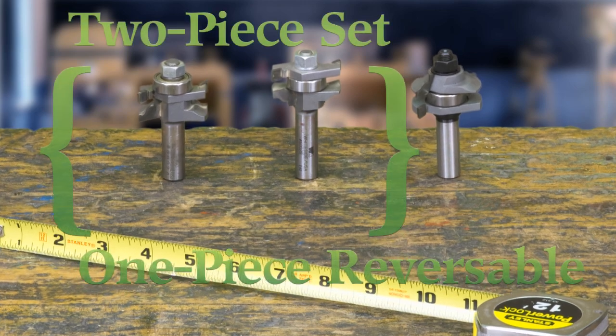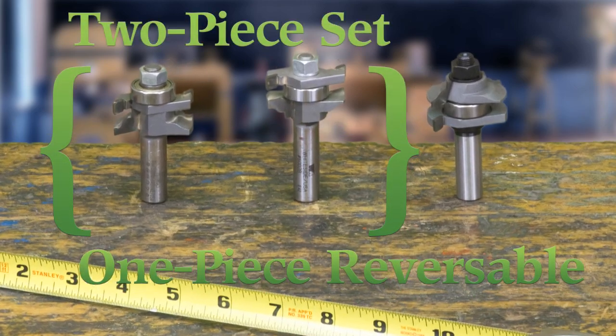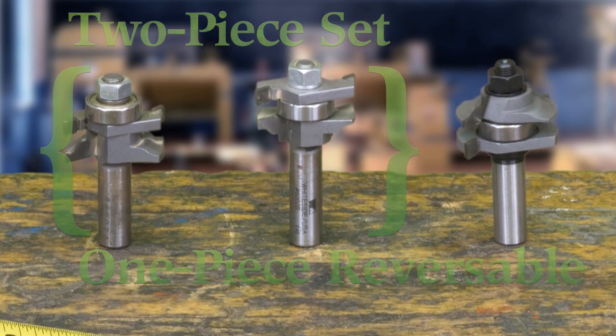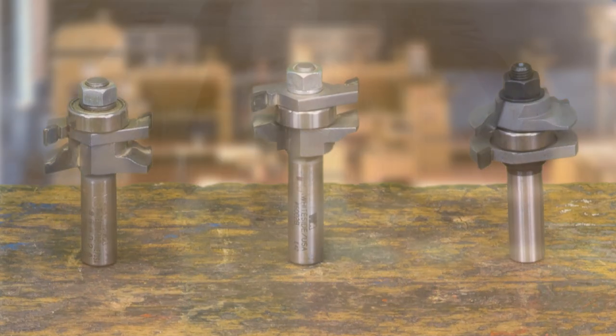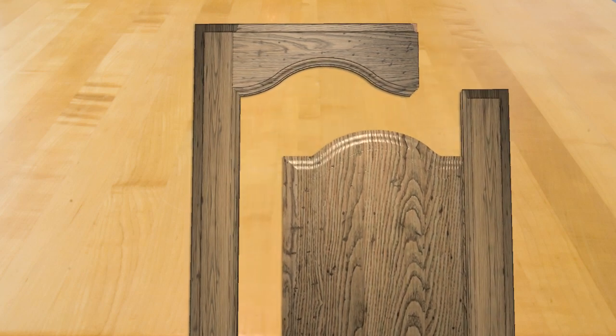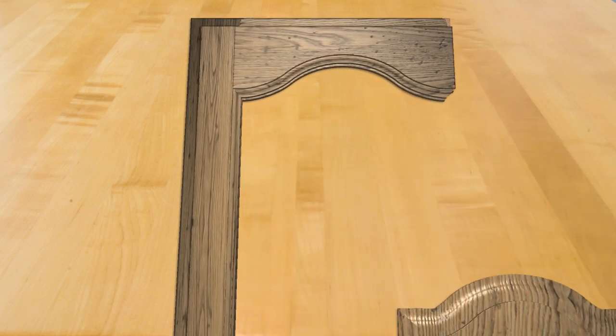Two-piece cope and pattern sets consist of separate cope and pattern bits, and are the most popular style. However, one-piece reversible bits are available. The pattern cut is made on the edge of all the rails and stiles. The cope cut is made on the ends of the rails, and mates with the pattern cut in the stiles.